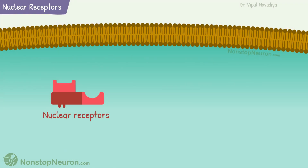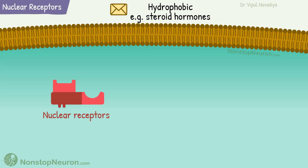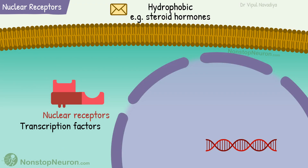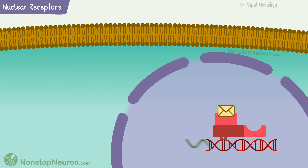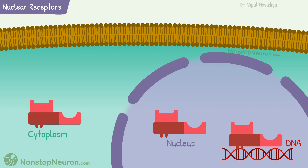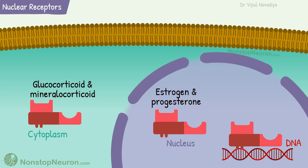Now, nuclear receptors. In contrast to previous receptors located on the cell membrane, these receptors are located inside the cell. Such receptors are for hydrophobic messengers like steroid hormones. They serve as transcription factors — proteins that regulate gene expression. Because protein synthesis takes time, the effect of these receptors takes longer to appear than other receptors. The location of unoccupied nuclear receptors varies: receptors for glucocorticoids and mineralocorticoids are mostly in the cytosol; receptors for estrogen and progesterone are primarily in the nucleus; and receptors for thyroid hormones and retinoic acid are bound to DNA under resting conditions.